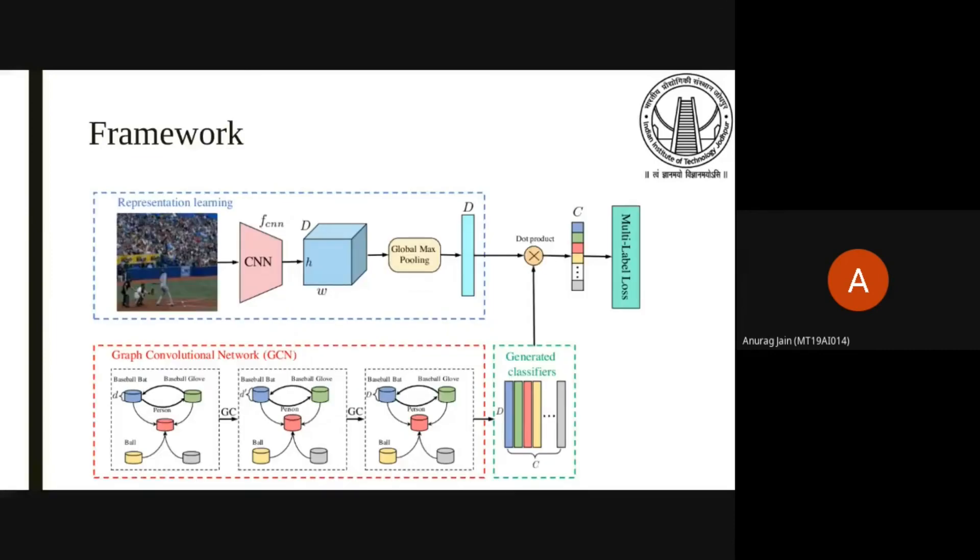The overall framework of the MLGCN consists of two main modules: image representation learning and GCN based classification learning module. For the image representation learning, we can use any CNN based model to learn image features. For the experiment, we used ResNet-101 feature maps after convolutional layer and then employed a pooling layer to obtain image level features of dimension 2048.